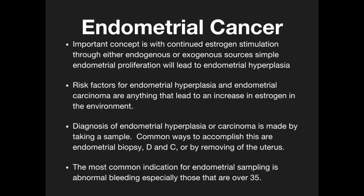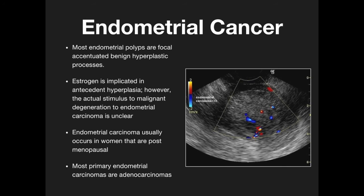Risk factors for endometrial hyperplasia and carcinoma are anything that leads to increased estrogen in the environment. Diagnosis is made by taking a sample — most commonly by endometrial biopsy, D&C, or removing the uterus. The most common indication for endometrial sampling is abnormal bleeding, especially in those over 35. Most endometrial polyps are focal benign hyperplastic processes. Estrogen is implicated in adenomatous hyperplasia; however, the actual stimulus for malignant transformation to endometrial carcinoma is unclear.